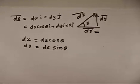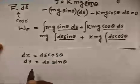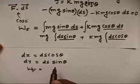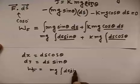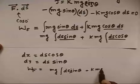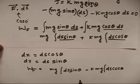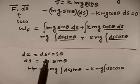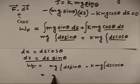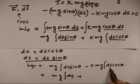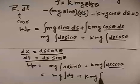If you see the previous expression, we have to find out work done by external force. This is equal to Mg integral ds sin theta plus Kmg integral ds cos theta. Ds sin theta is nothing but dy. So this is Mg integral dy and ds cos theta is nothing but dx. So this is Kmg integral dx.